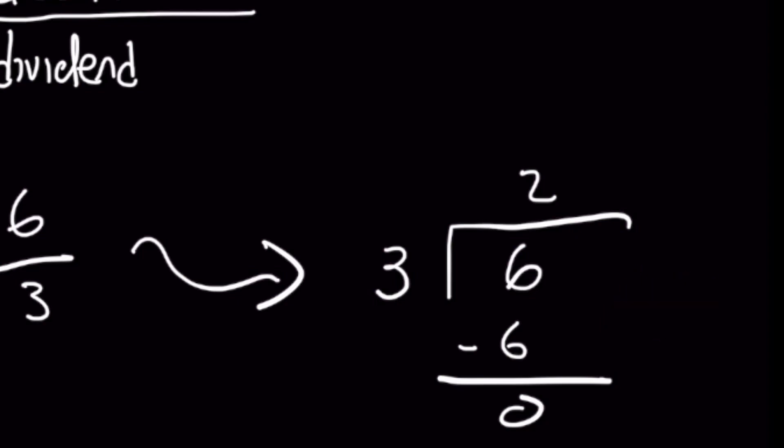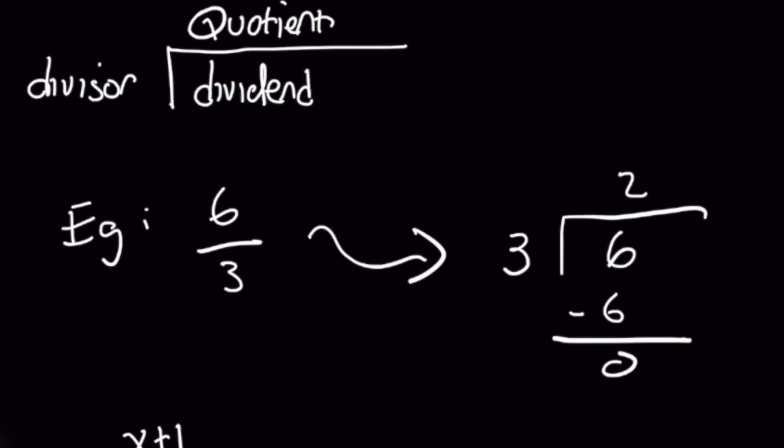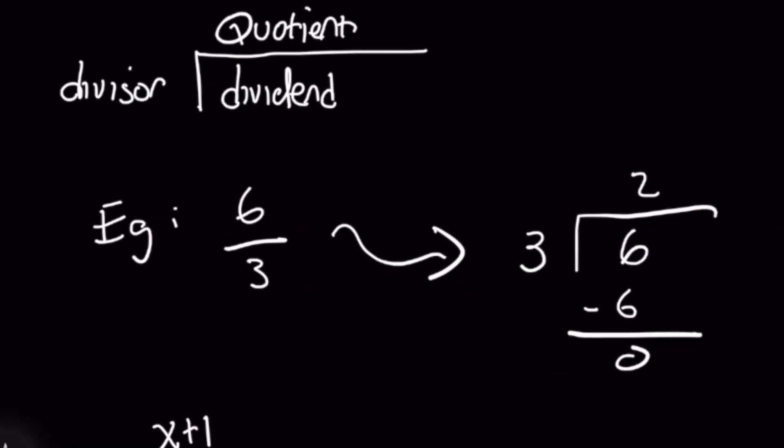Okay but for polynomial division is it really different? Well yes and no. We use the same idea but in this case polynomials have terms that are not constants. So in a sense it's a little bit more challenging but it's the same idea.